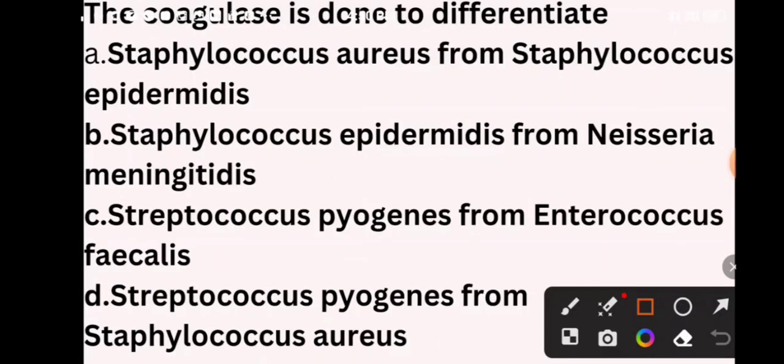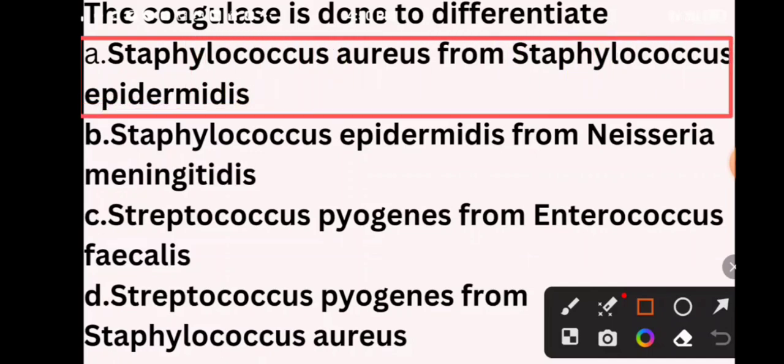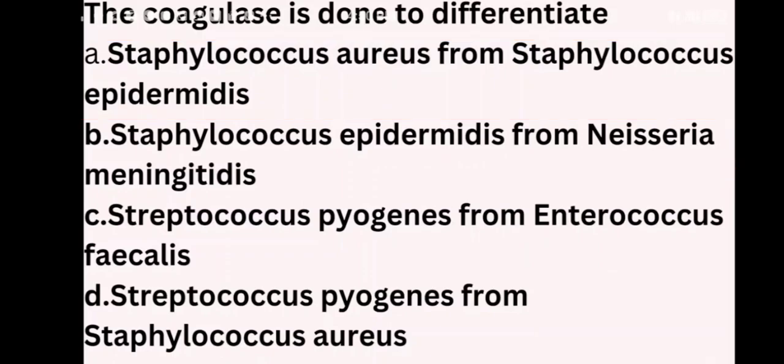Next question: The coagulase test is done to differentiate Staphylococcus aureus from Staphylococcus epidermidis, Staphylococcus epidermidis from Neisseria meningitidis, Streptococcus pyogenes from Enterococcus faecalis, or Streptococcus pyogenes from Staphylococcus aureus. The correct answer is option A, Staphylococcus aureus from Staphylococcus epidermidis.